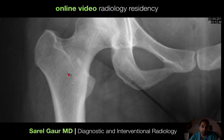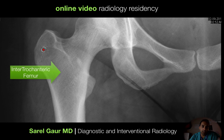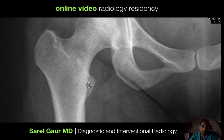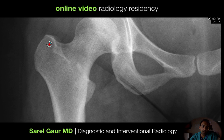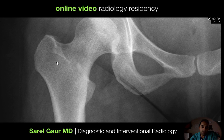Here you can see the right femur. This is the subtrochanteric region of the femur, this is the intertrochanteric region of the femur. Here's the greater trochanter and the lesser trochanter — the lesser trochanter is actually an anterior structure where the iliopsoas inserts, and the greater trochanter is where the gluteal muscles insert. I want to look for any subtrochanteric or intertrochanteric fracture, as evidenced by lucency in this region.